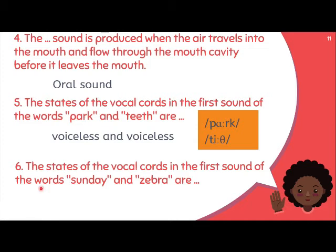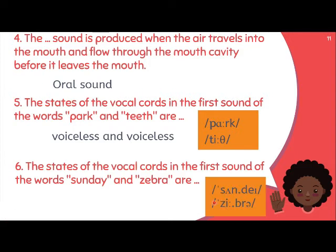Number six is similar: 'The state of the vocal cords in the first sound of the word sundae and zebra.' The method is the same. Even if we don't know the phonetic transcription, we can guess — it's /ʃ/ and /z/. If we look at the phonetic transcription, we get /ʃ/ and /z/. So the state of the vocal cords is voiceless for /ʃ/ — there is no vibration — and for /z/ there is vibration, so it is voice.